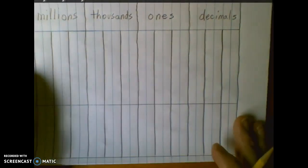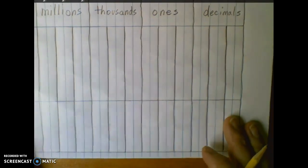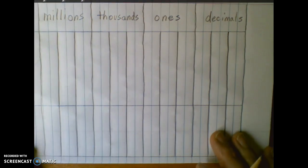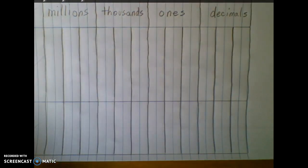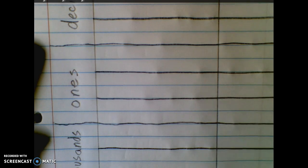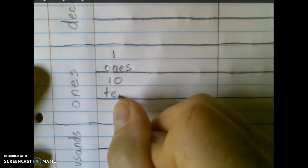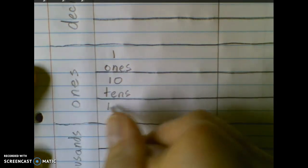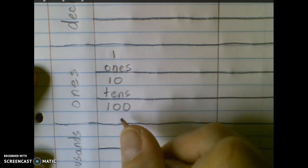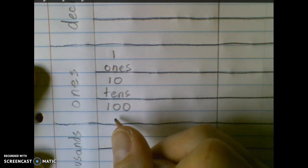Now that we've created this set of columns, we want to label them. So I'm going to reorient the page. Here you can see that I've focused in on the ones period. And in the ones period, we have one, we have ten, and we have one hundred, each different place values in the ones period.